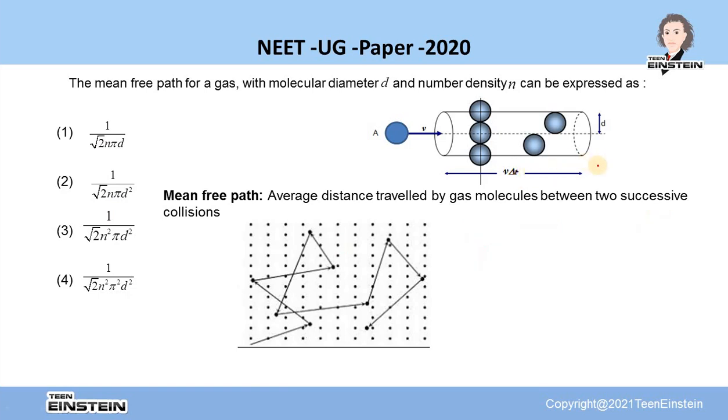Now if we know the number density, that means the number of molecules per unit volume, here it is given as n, then the total number of molecules with which this A will collide is obtained as n·πd²v·Δt. So this is the total number of collisions.